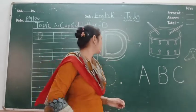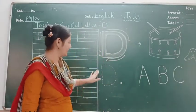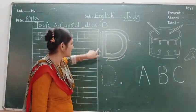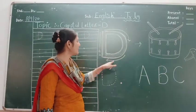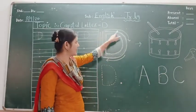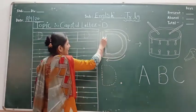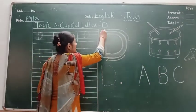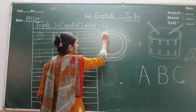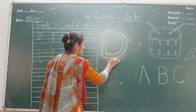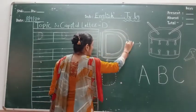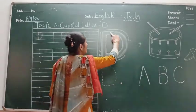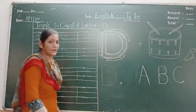So students, how do you write capital letter D? To make a capital letter D, first make a standing line, and second make a curve line. First standing line and second curve line — that makes a capital letter D.